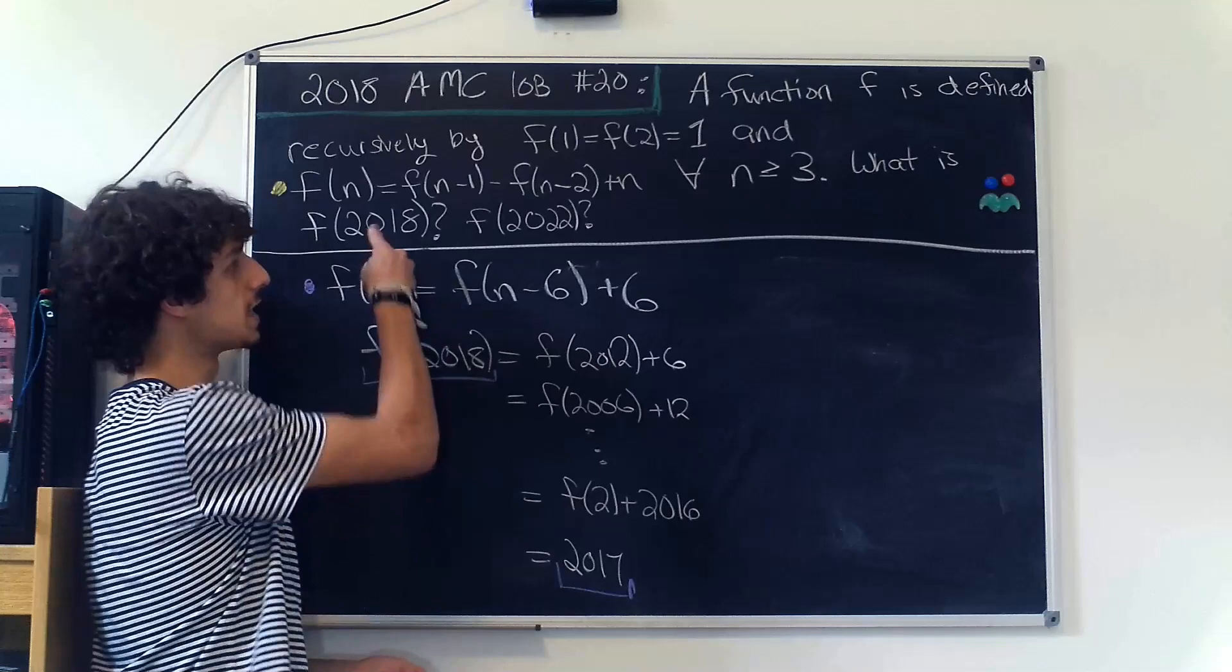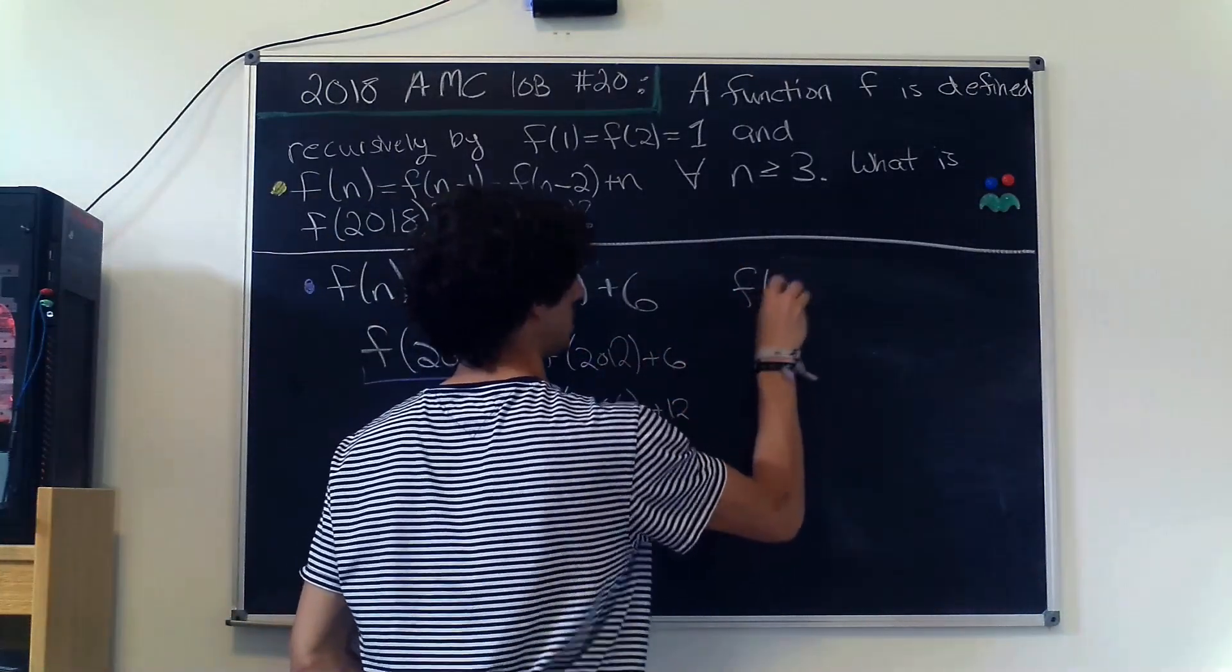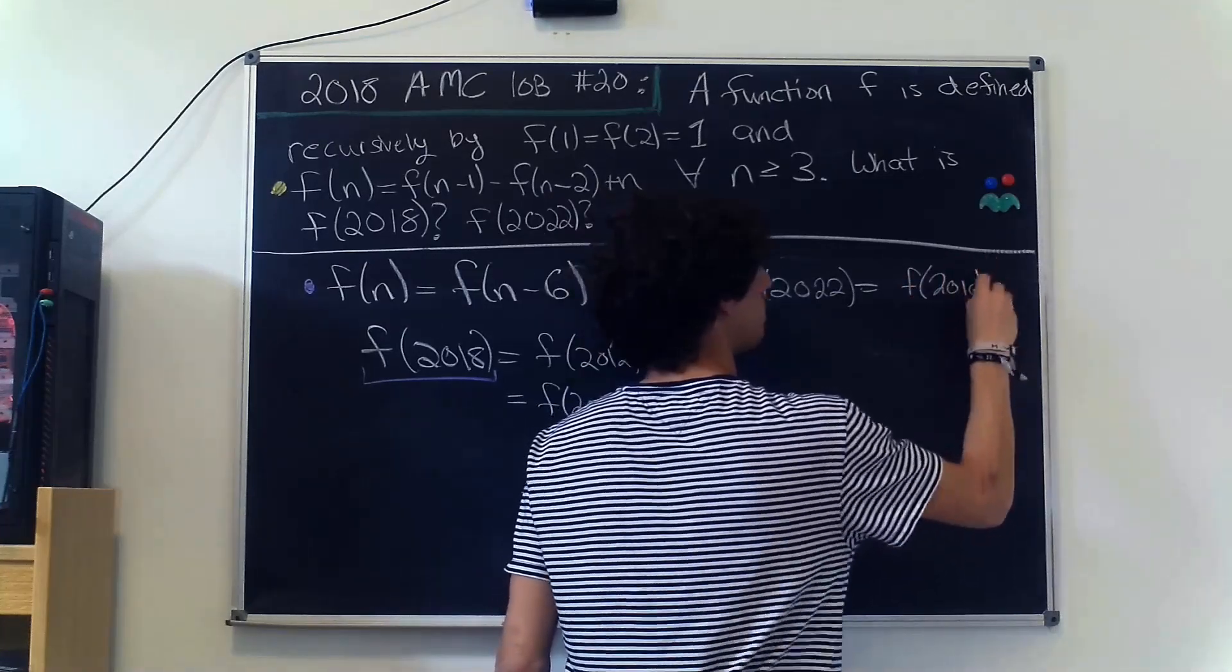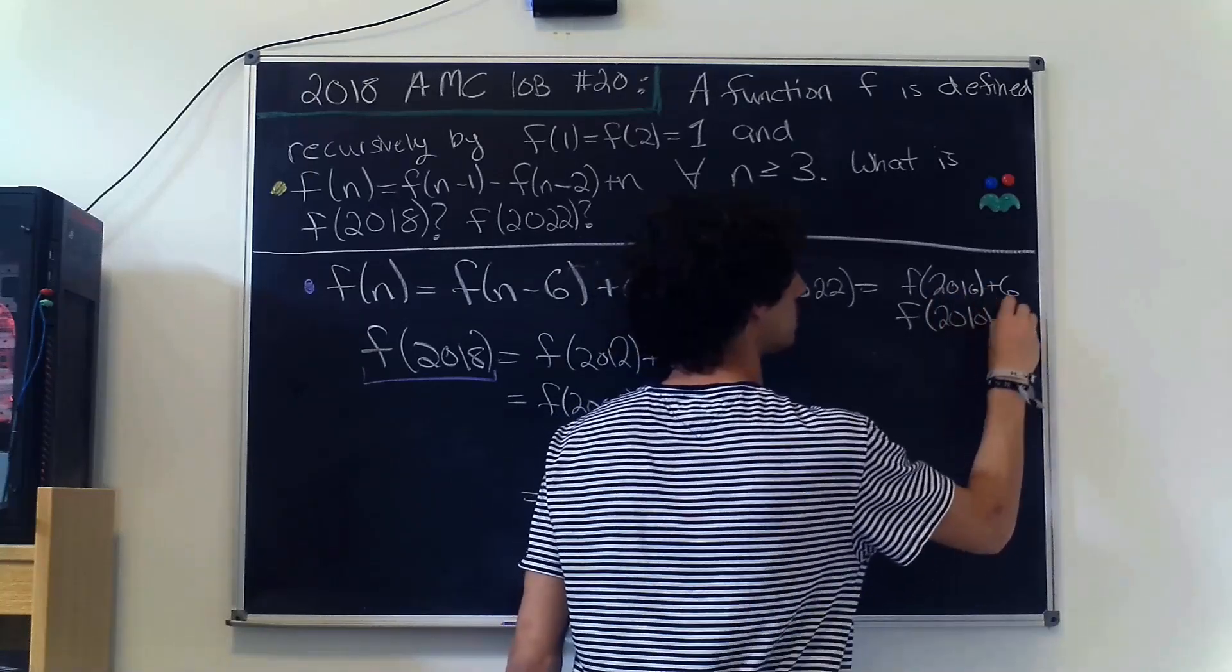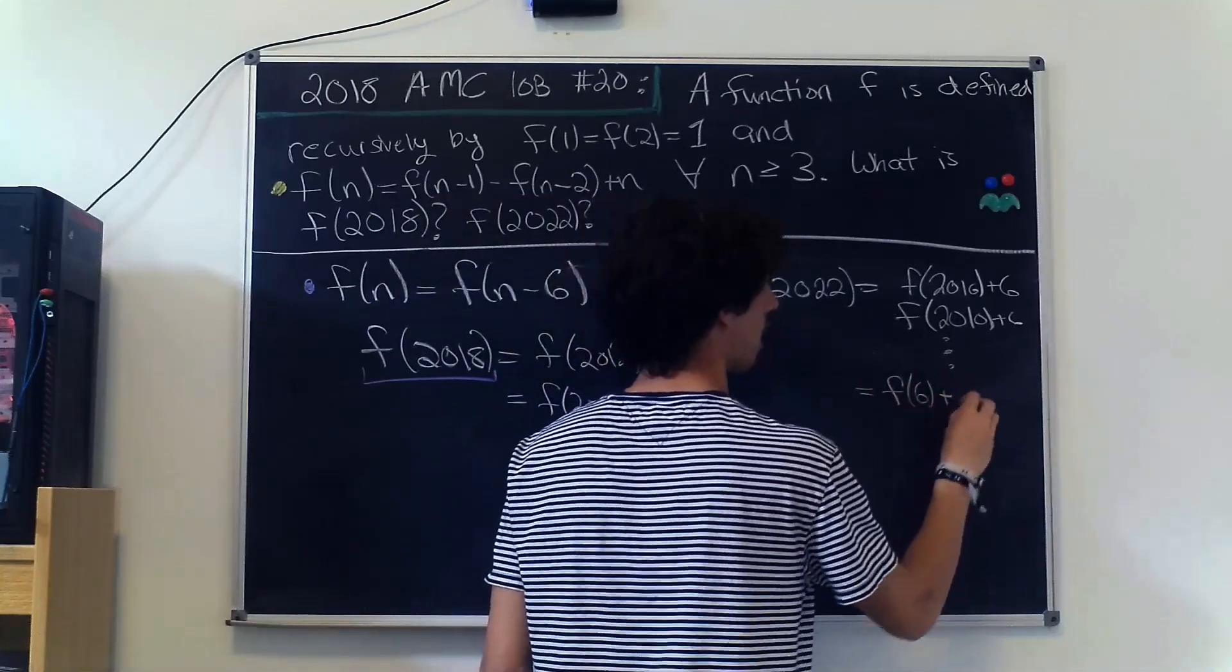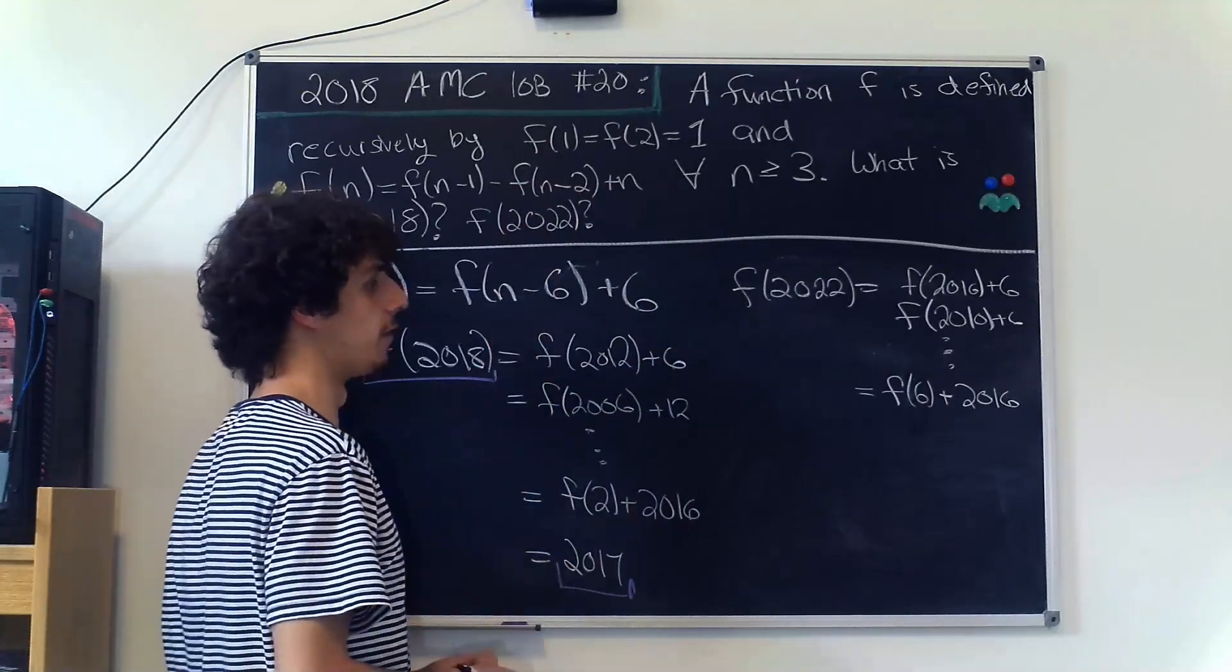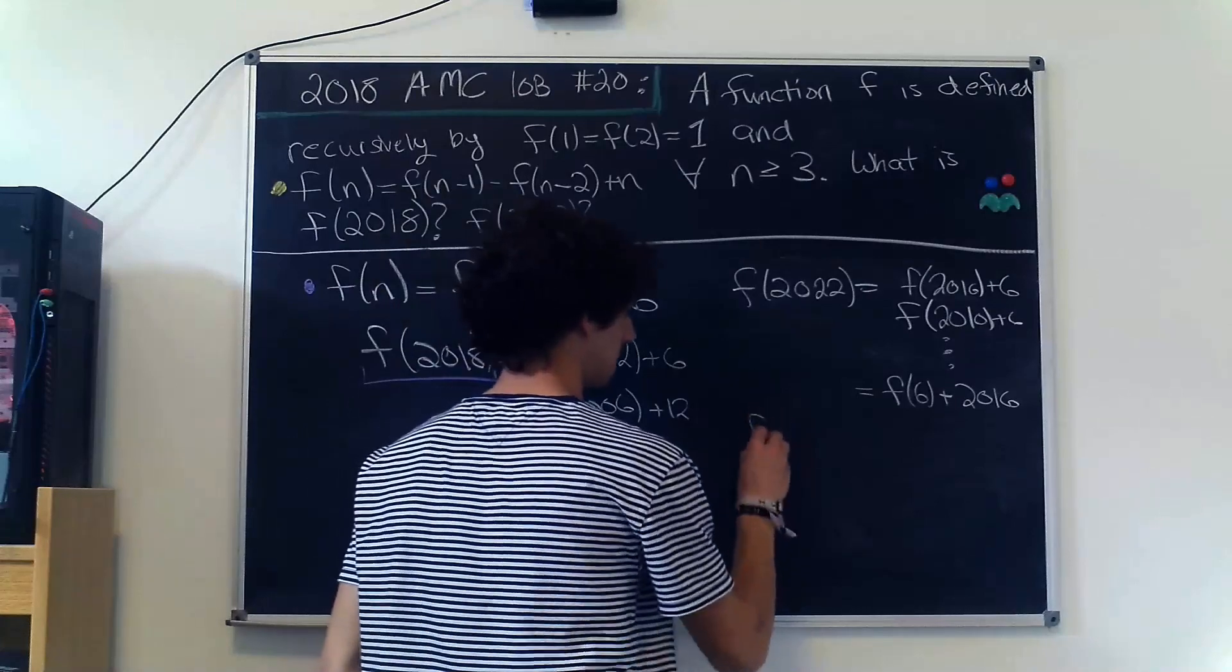So that's where this problem stops, but I want to go ahead and apply this for f(2022). So we get f(2016) plus 6, f(2010) plus 6, and we go all the way down until we get to f(6) plus 2016. But we aren't given an f(0) here, so we're actually going to need to find what f(6) is.